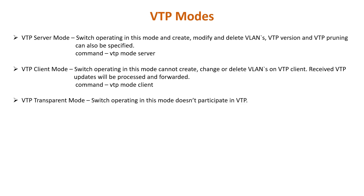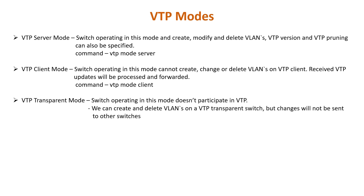The third is VTP transparent mode. A switch operating in this mode doesn't participate in VTP. A VTP transparent switch does not advertise its VLAN configuration and does not synchronize its VLAN configuration based on received advertisements, but it does forward received VTP advertisements. You can create and delete VLANs on a VTP transparent switch, but the changes will not be sent to other switches. To configure a switch to use VTP transparent mode, use the 'vtp mode transparent' global configuration command.